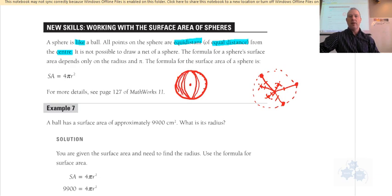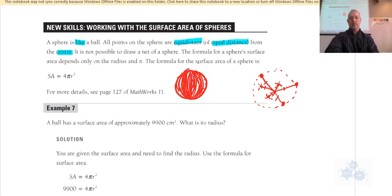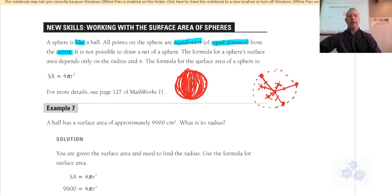A sphere is like a whole bunch of two-dimensional circles in different planes. If you filled them all in, you would have a sphere. And you have a ball.